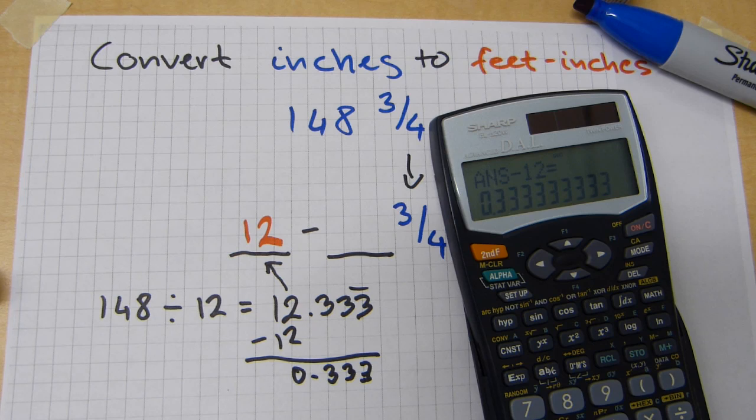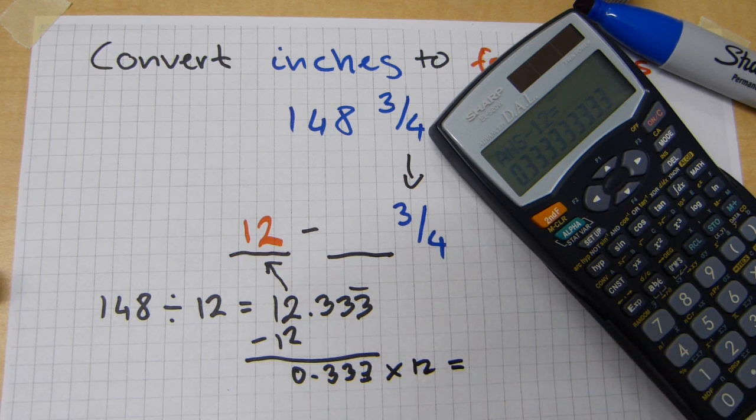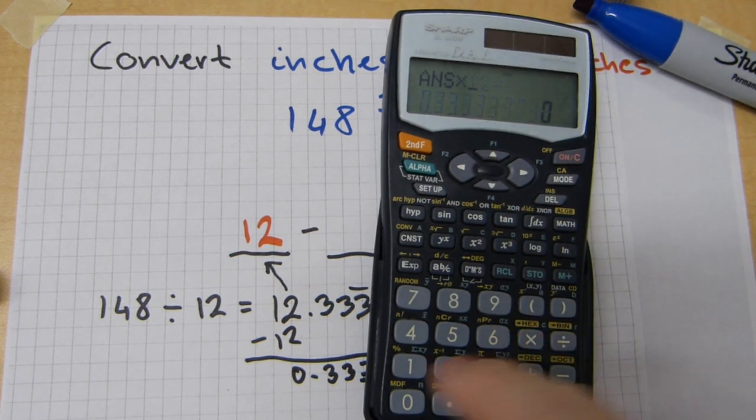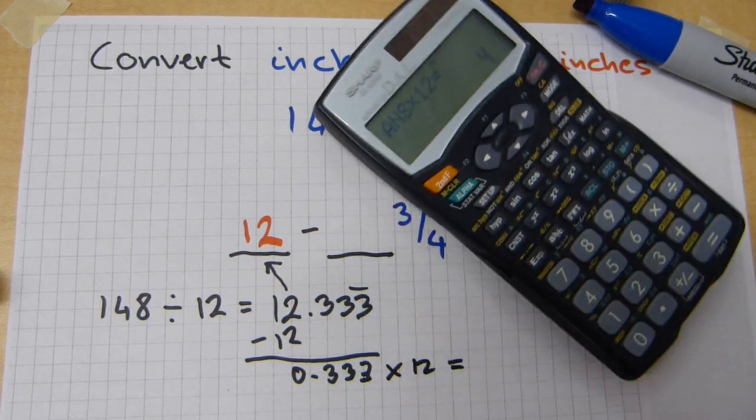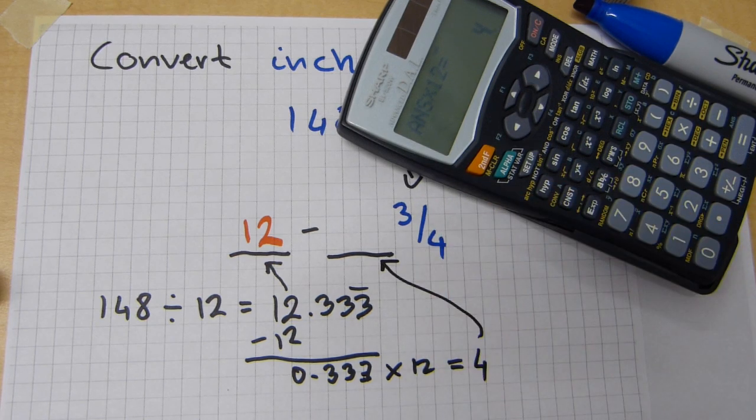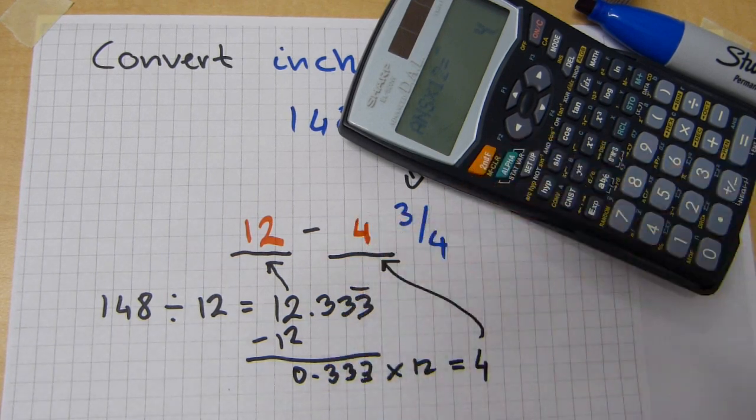This needs to be multiplied again by 12. I'm gonna write it here. Multiplied by 12 equals. Let's do that. Times 12 equals 4. And that 4 gets copied here as inches. That's your whole number of inches. 4 inches.